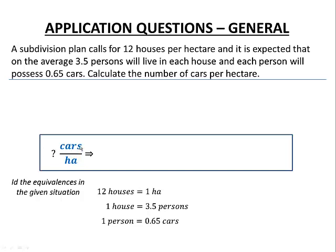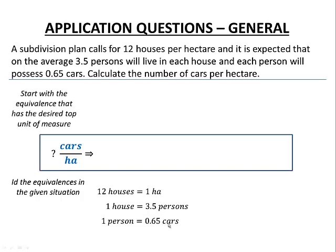A good strategy is to look at the numerator. I want cars, so I scan through my equivalences and find the one that has cars in it. I take that equivalence and make it a unit ratio such that the unit I want is in the numerator: 0.65 cars per person. Now I have a good starting point — cars are already in the numerator.